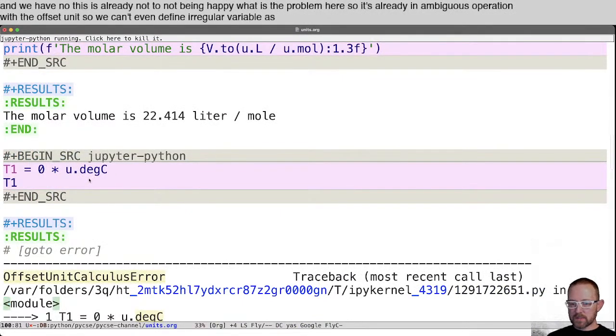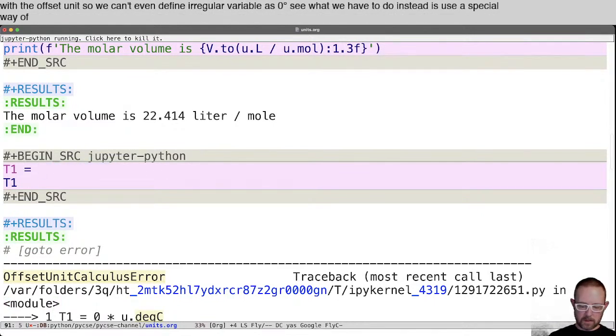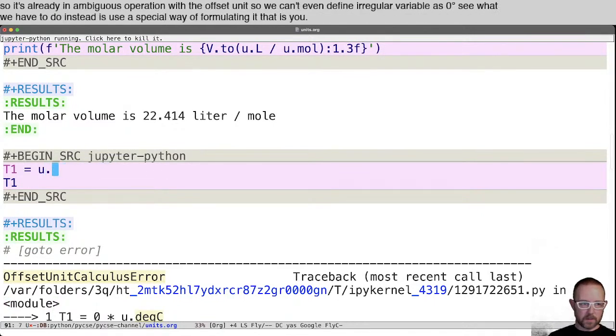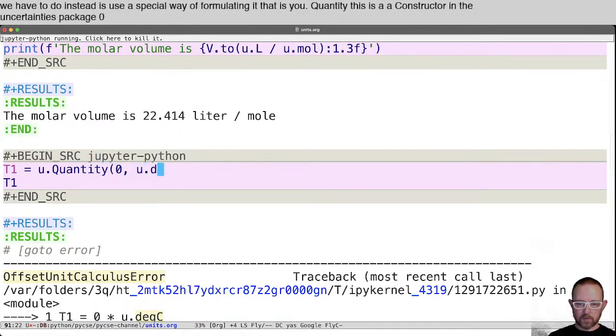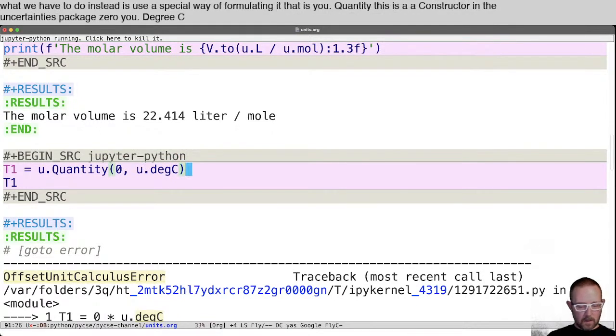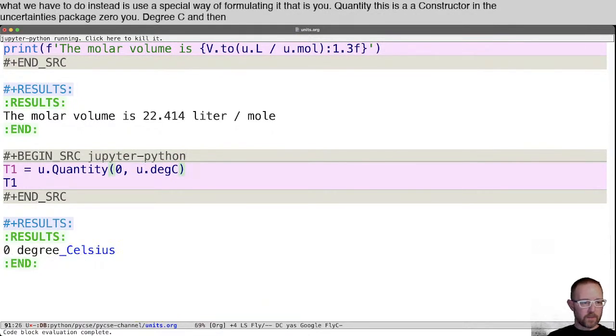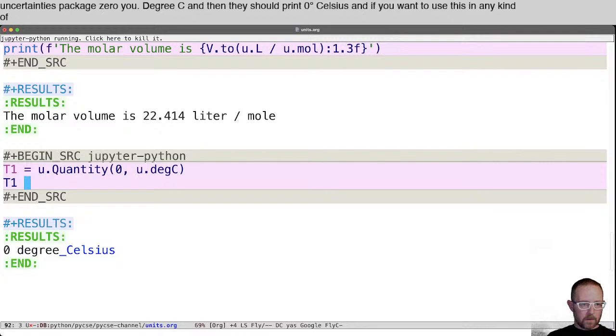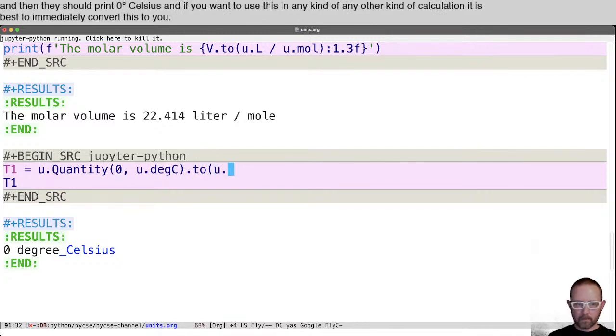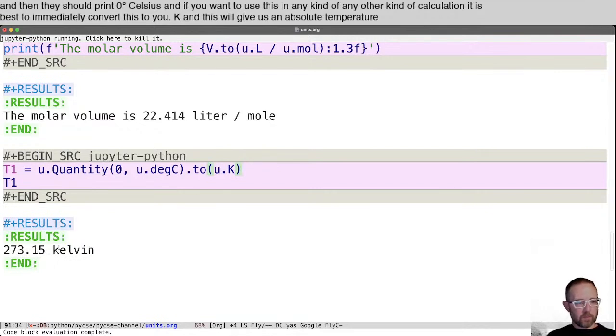What we have to do instead is use a special way of formulating it. That is U dot quantity. This is a constructor in the uncertainties package zero U dot degree C. And then this should print zero degrees Celsius. And if you want to use this in any kind of any other kind of calculation, it is best to immediately convert this to U dot Kelvin. And this will give us an absolute temperature of two seventy three point one five Kelvin. And then we can use this like we did up here.